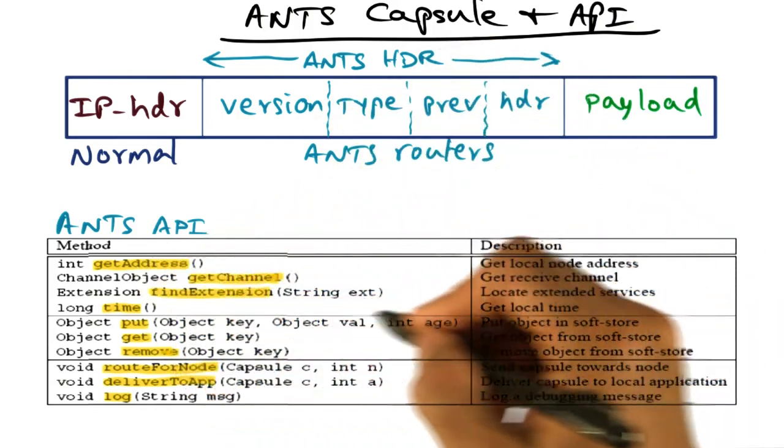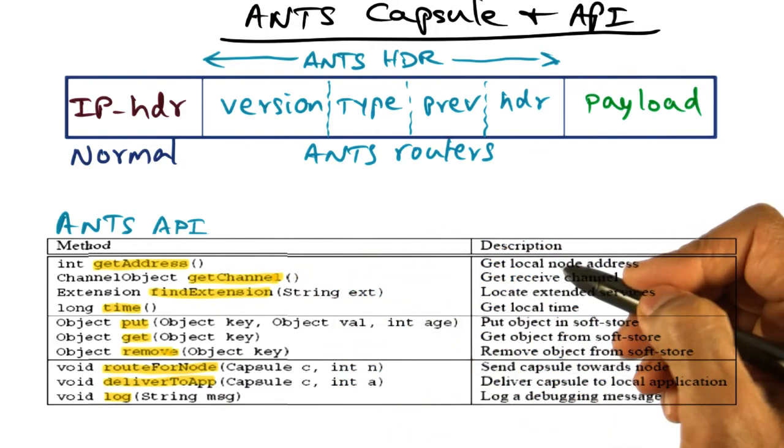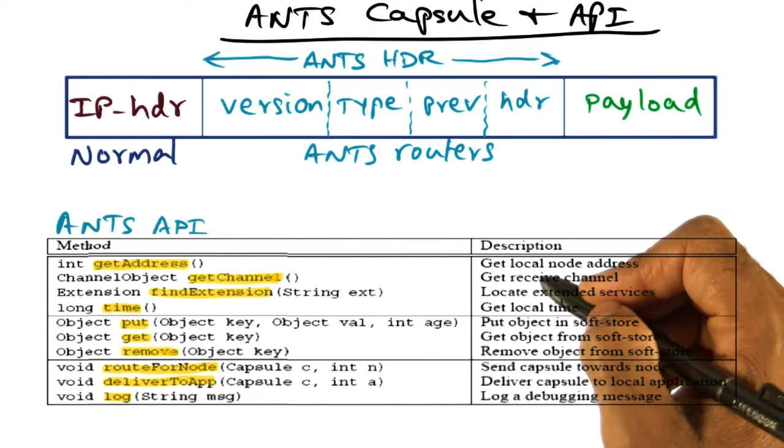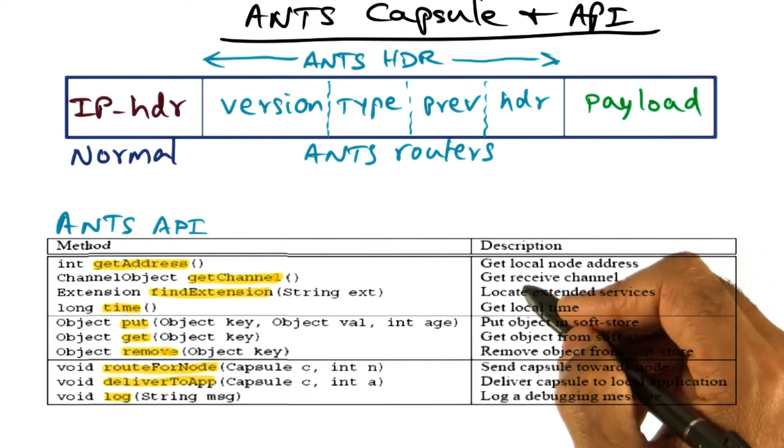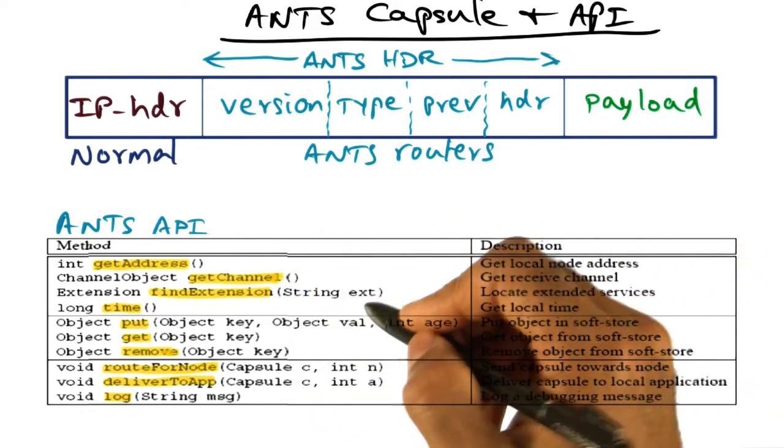And the third category of API that's available is querying the node for interesting tidbits about the state of the network or details about the node itself, for instance what is the identity of the node that I'm currently at and what the local time is at this node and so on and so forth. So these are the kinds of things that are available.